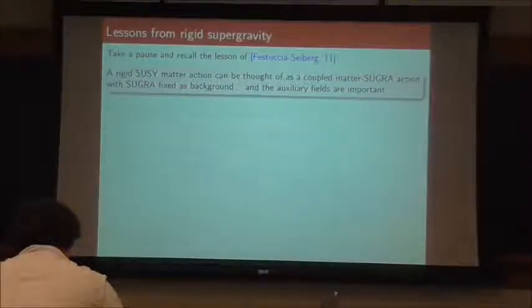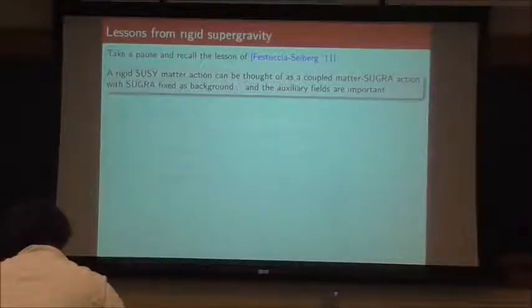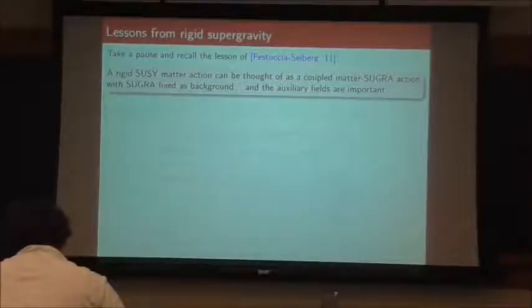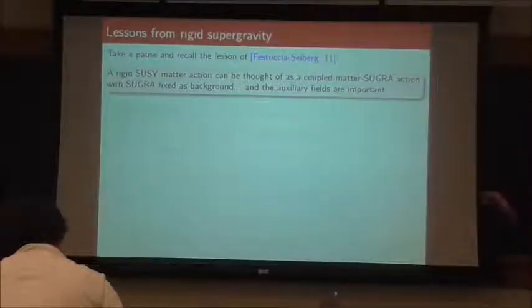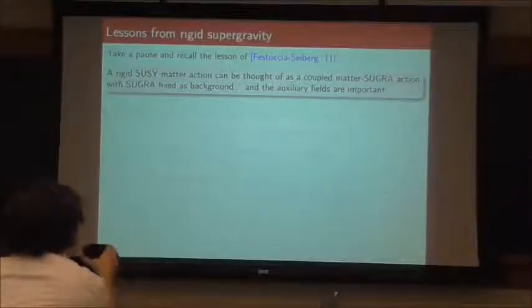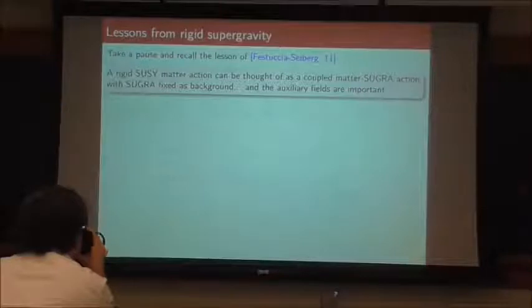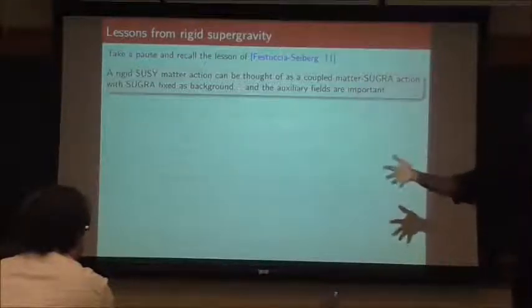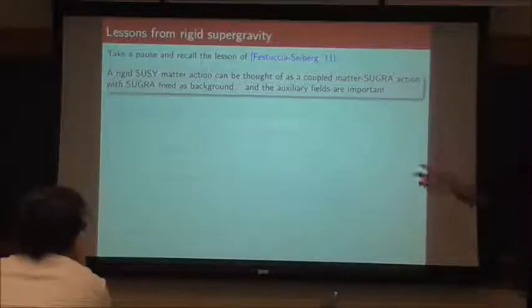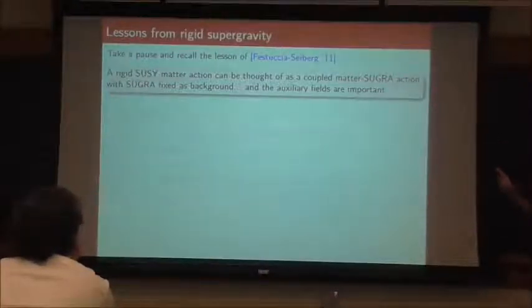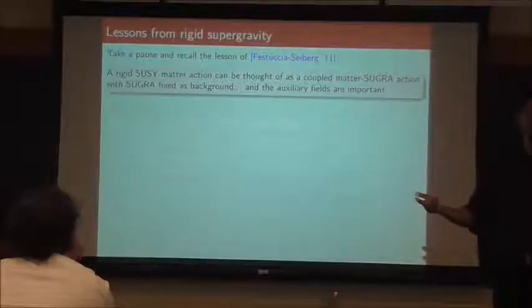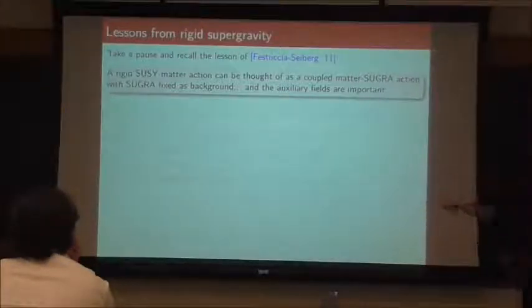Before getting into too much detail, let's just recall what Festuccia and Seiberg did. They proposed that a rigid supersymmetry matter action should be thought of as a coupled matter-supergravity action, where you freeze the supergravity as a background. This is actually important. When you're freezing the supergravity as a background, the idea is the metric doesn't obey Einstein's equations — it's just a frozen metric. But what that means is the whole multiplet, so the metric is off-shell, so the entire multiplet has to be off-shell.